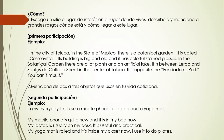Here I have an example. In the city of Toluca, in the state of Mexico, there is a botanical garden. It is called Cosmovitral. Its building is big and old, and it has colorful stained glasses. In the botanical garden, there are a lot of plants and an artificial lake. It is between Lerdo and Santos de Goyado Street in the center of Toluca. It is opposite the Fundadores Park. You can't miss it.